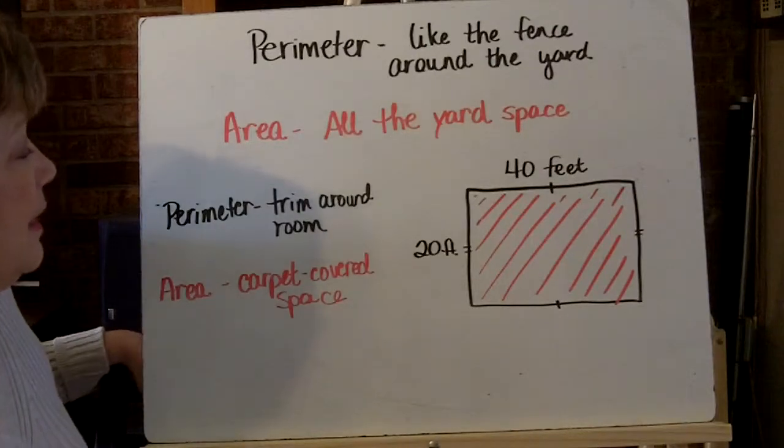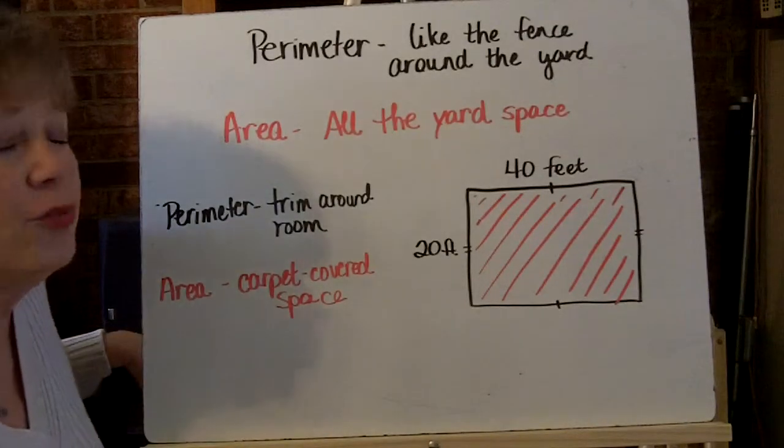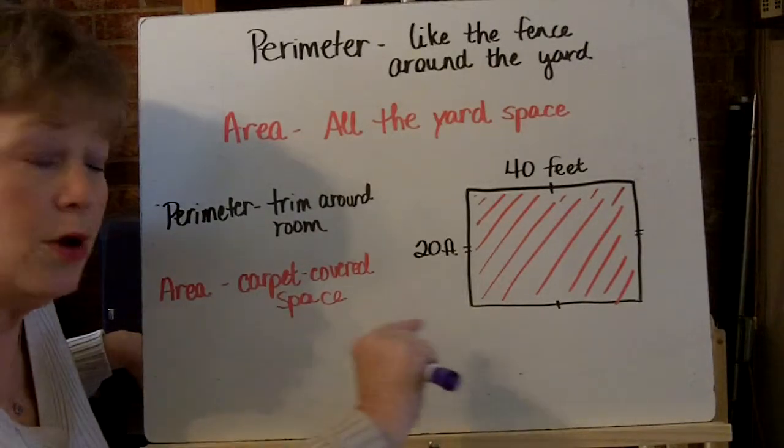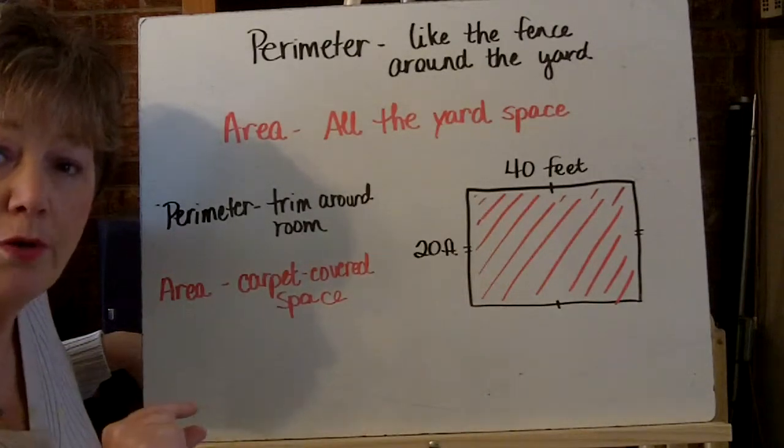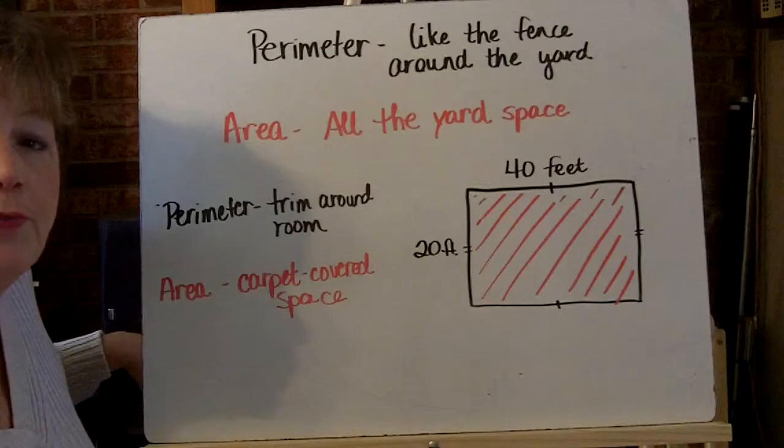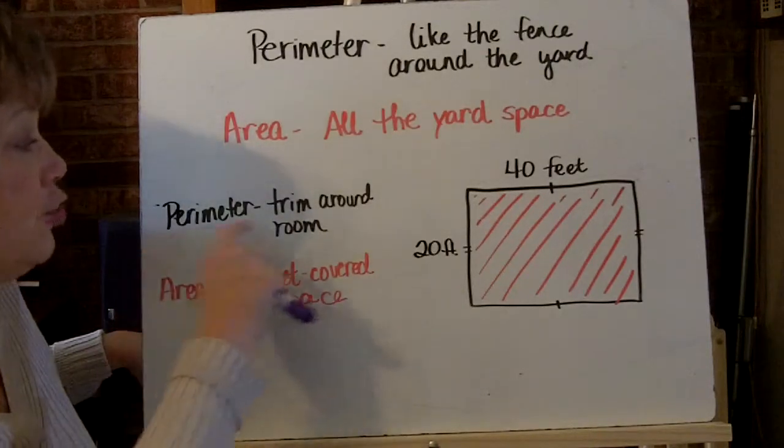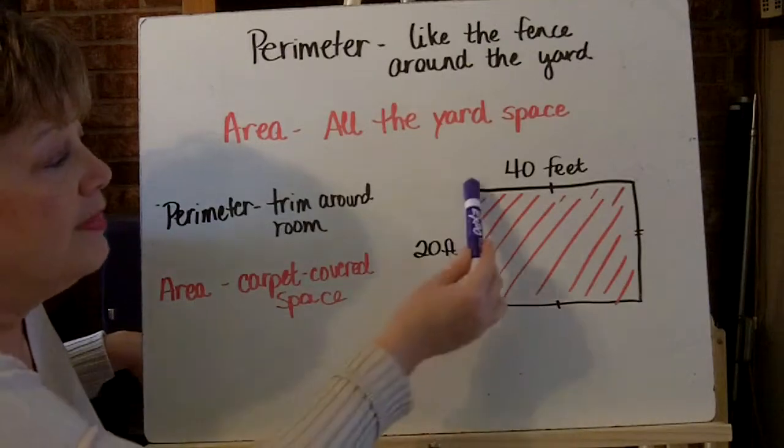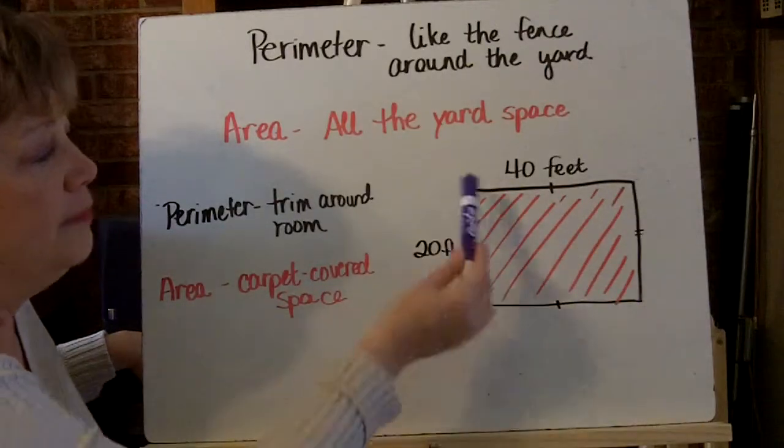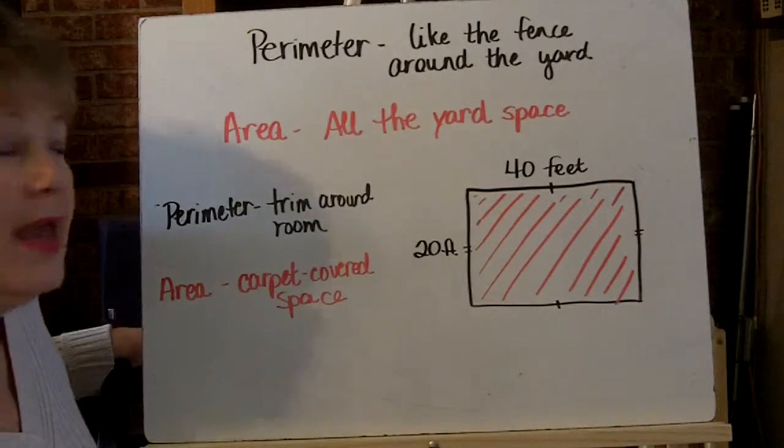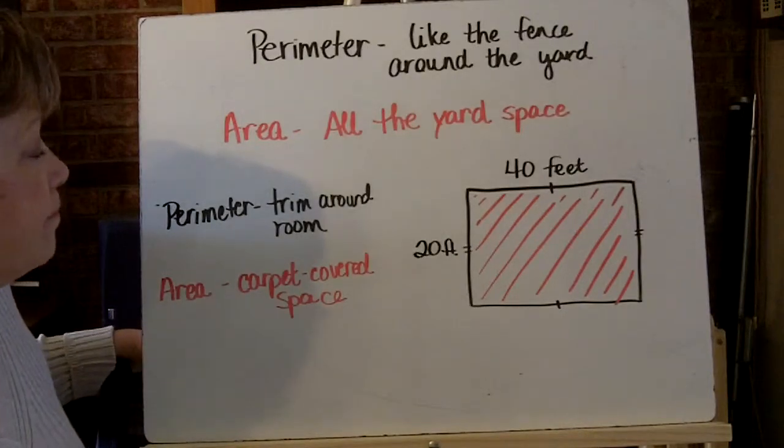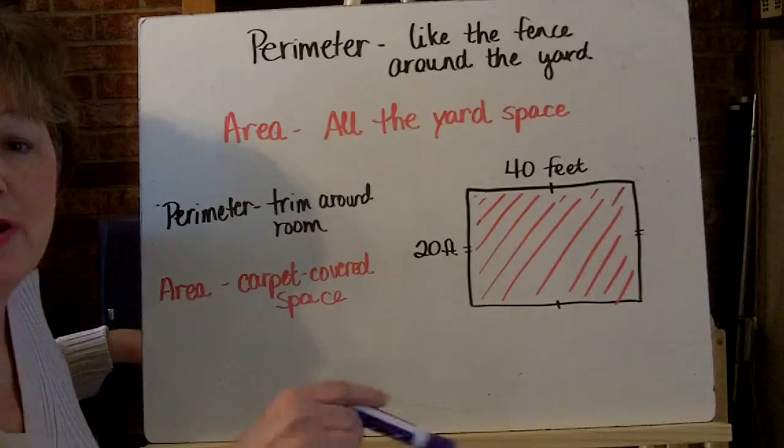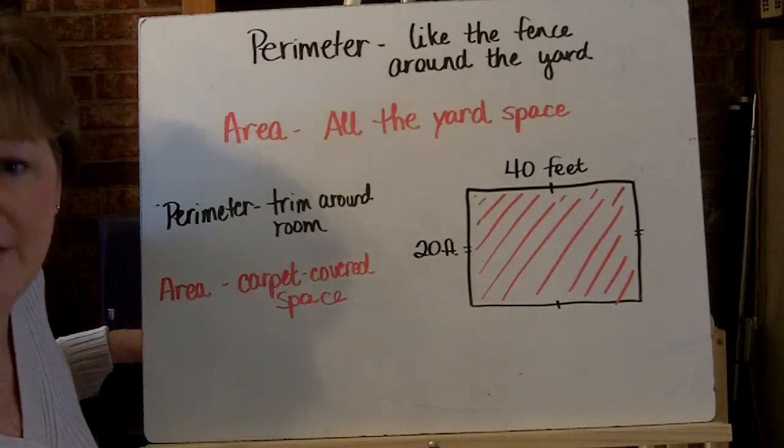If you're thinking about something inside the house, if you look around the room, most of you probably have some kind of trim around the edge of your floor. The perimeter is like measuring the trim around the room. So if this was your family room, this would be the trim area. The perimeter is just that. It is the exact measurements of the outline of something.